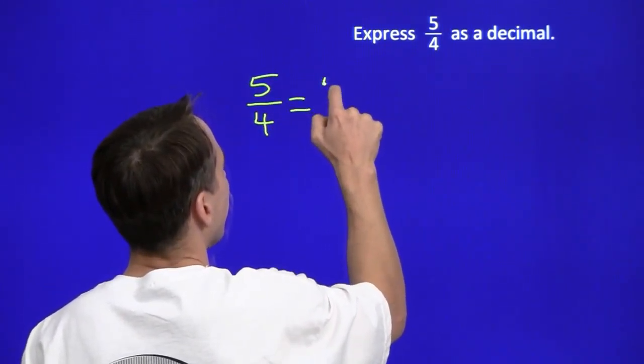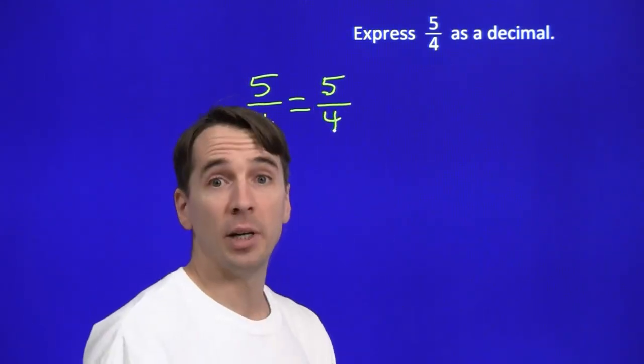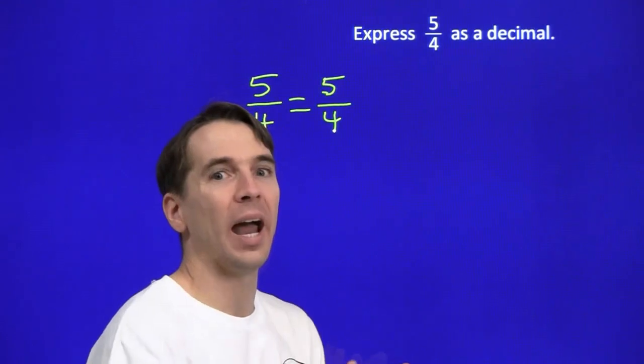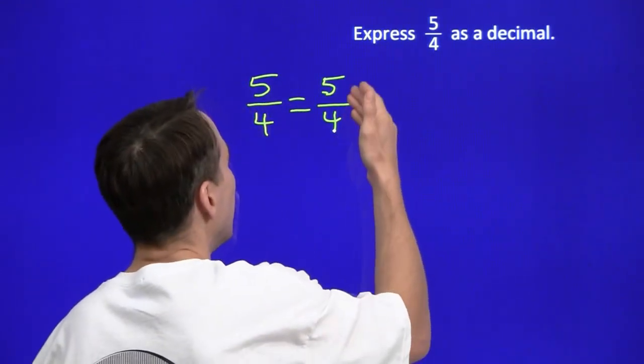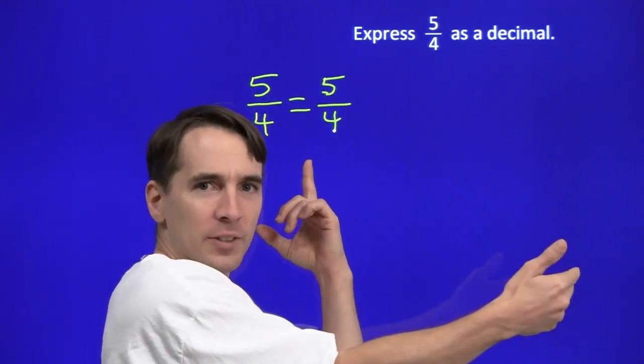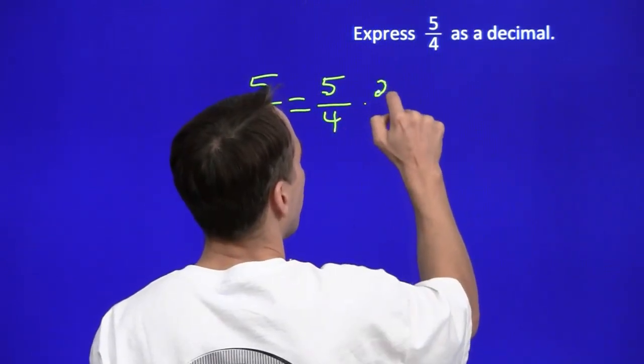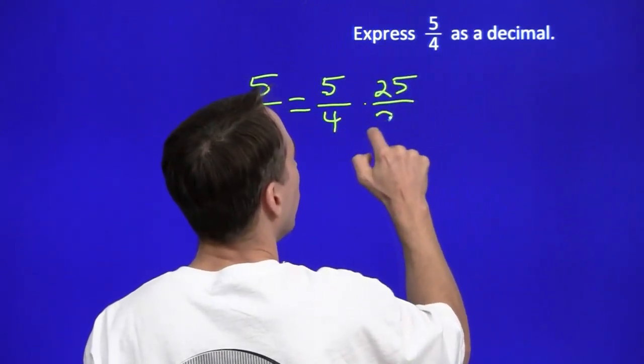We know how to handle denominators that are powers of 10. So I want to write 5 fourths as a fraction whose denominator is 10. So we're going to strategically multiply by 1, just like when we are adding fractions or comparing fractions. How do I turn 4 into a power of 10? 4 times 25 is 100.